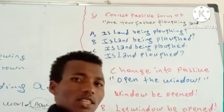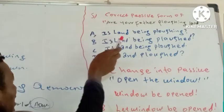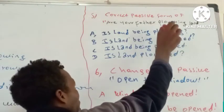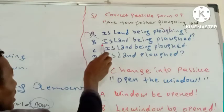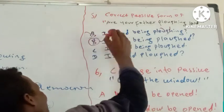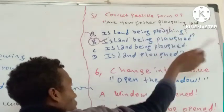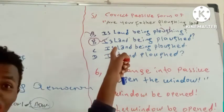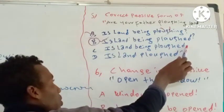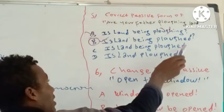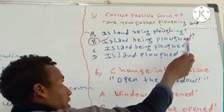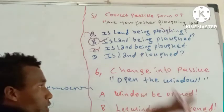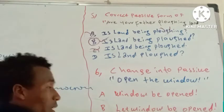Option A) 'Is land being ploughed?' — not the correct answer because of a verb issue. Option B) 'Is land being ploughed?' — this is the correct answer. The correct answer is B, because of the question form structure. In the passive question form, 'Is the land being ploughed?' is correct.